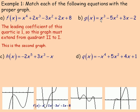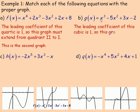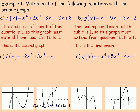For b, the g(x) function is a cubic with a leading coefficient that's positive. So this cubic must go, as any normal positive cubic does, from quadrant three to quadrant one. So this would have to be the first graph — that's the g(x) function.